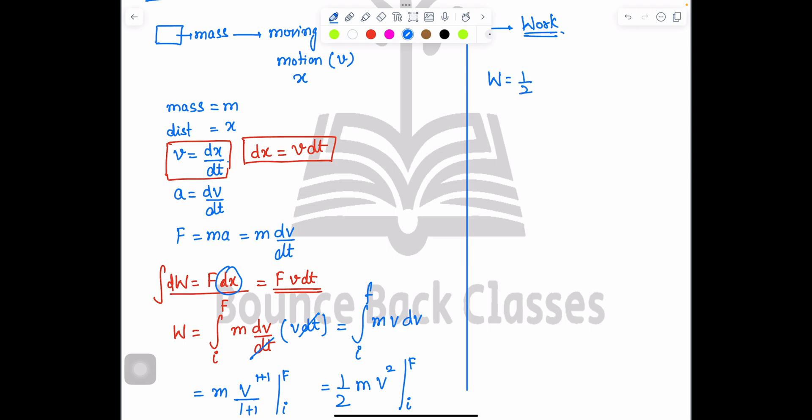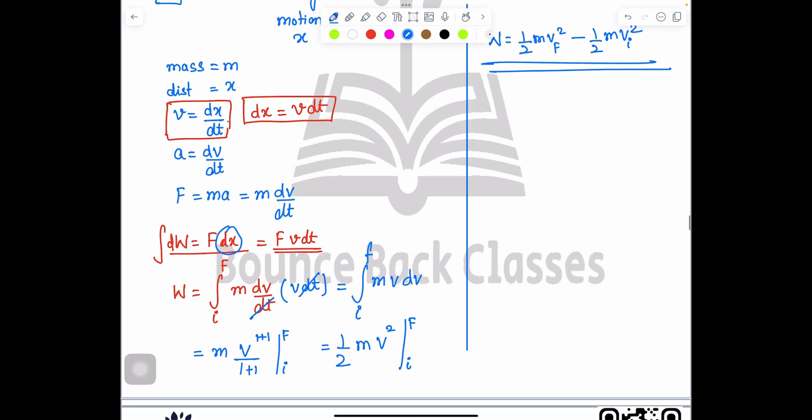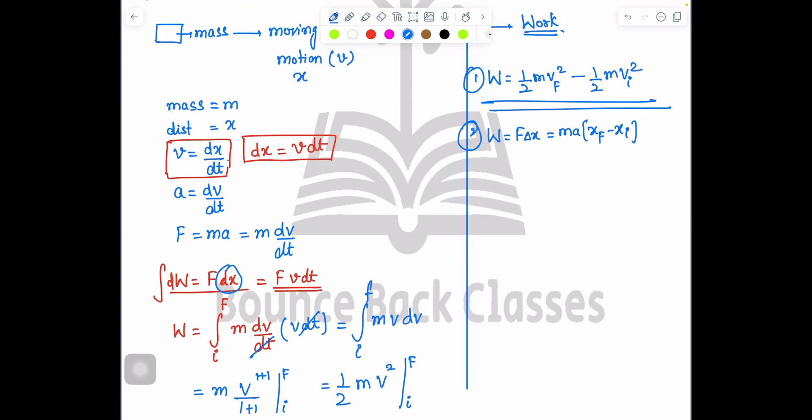So what we get? Work done is equals to half m v f square minus half m v i square. Clear. So we understand all the things, how to solve them. We have work done which equals F delta x, which equals F is m a, x f minus x i, yes or no? So we verify the first equation and the second equation. Clear.